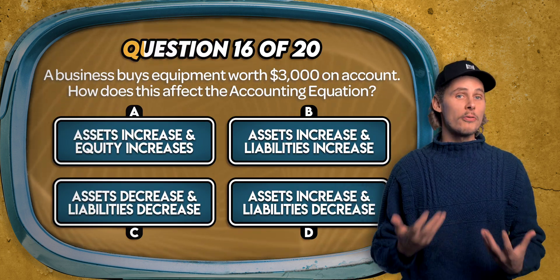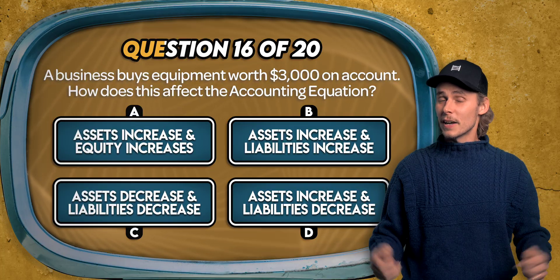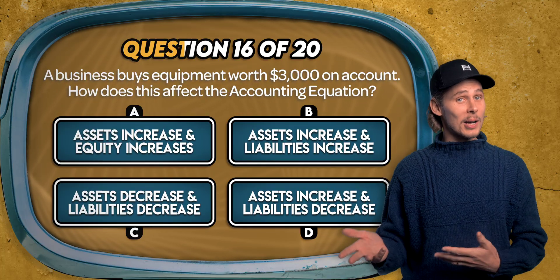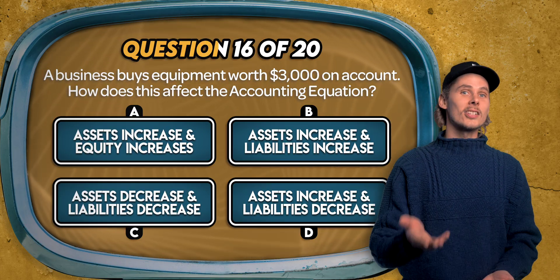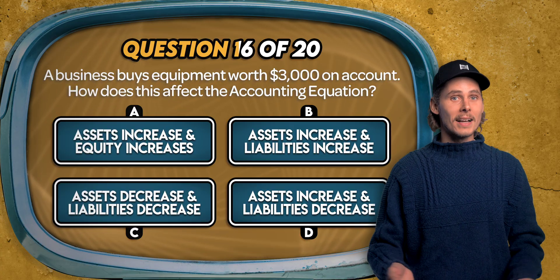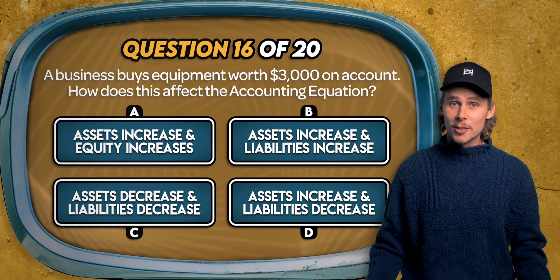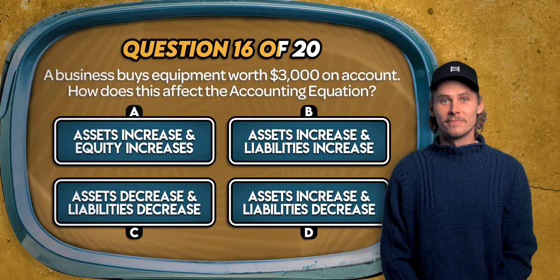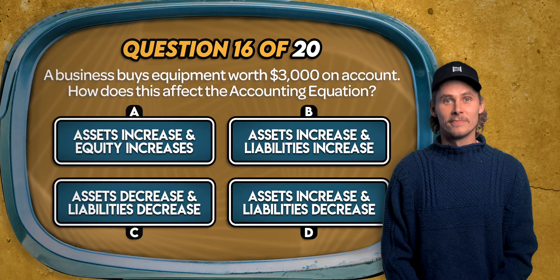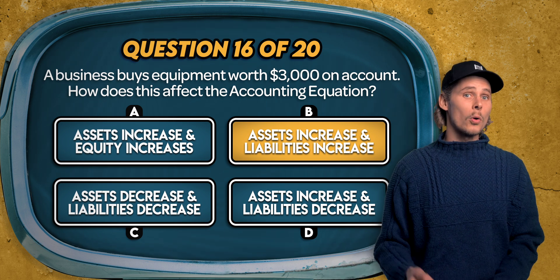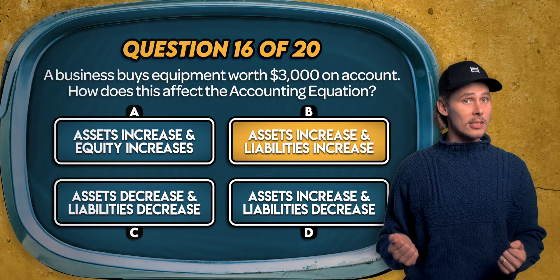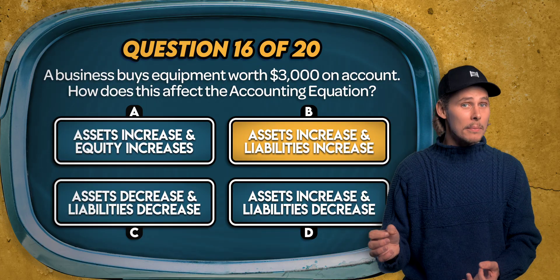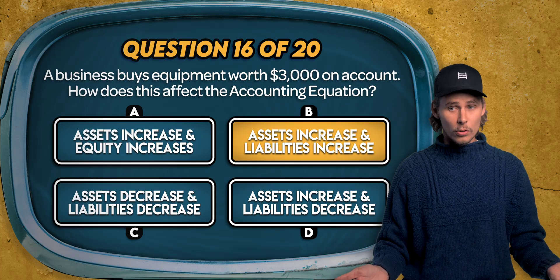Question 16. A business buys equipment worth $3,000 on account. How does this affect the accounting equation? Assets increase and equity increases? Assets increase and liabilities increase? Assets decrease and liabilities decrease? Or assets increase and liabilities decrease? The answer is B. The business acquires equipment worth $3,000 so fixed assets go up. And since the purchase was made on account, a new account payable of $3,000 is created, which is a liability.